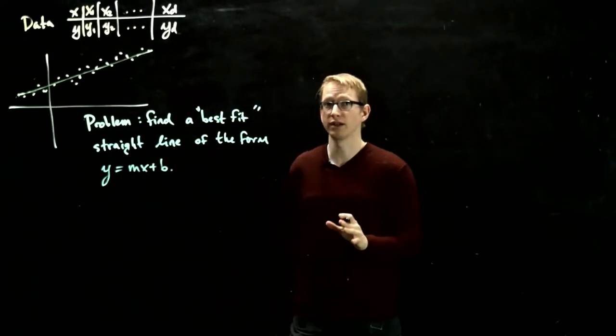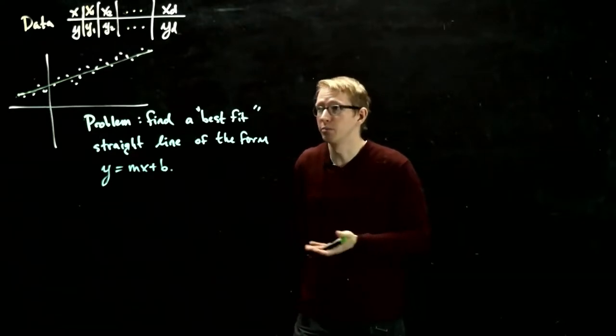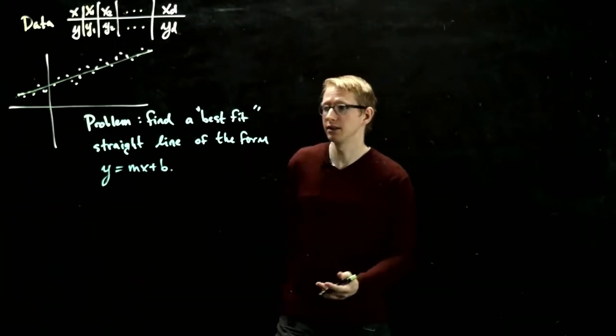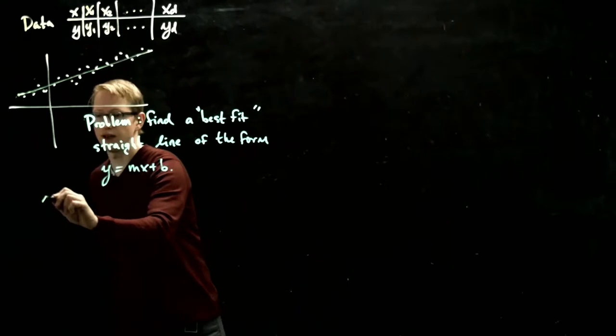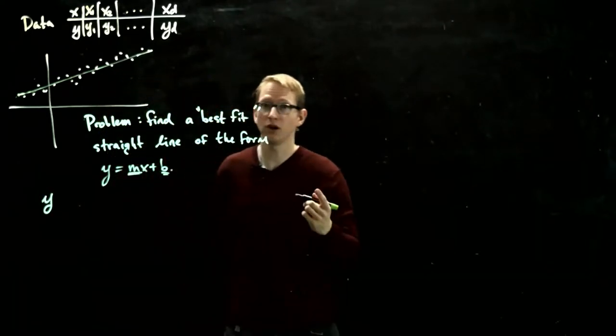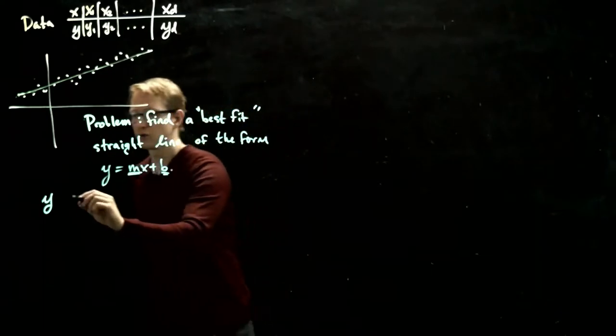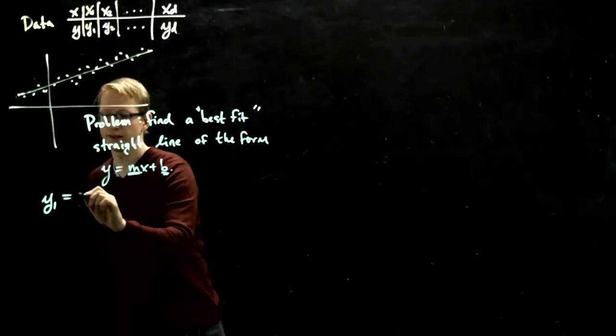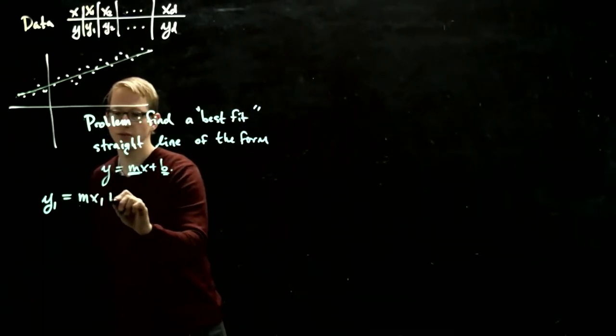Now if we wanted to actually try to solve this problem, and suppose that all of these points actually lied on this line, we would want to solve this entire system. Now m and b are our unknowns, we don't know the slope, we don't know the y-intercept. So we'd have y1, we want to set it equal to mx1 plus b.